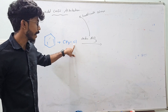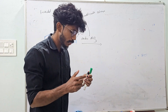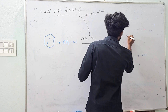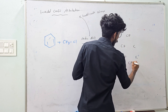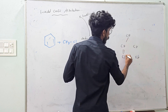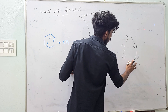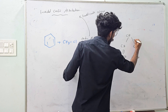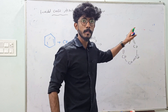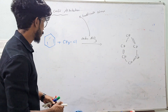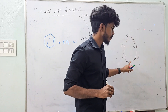Anhydrous aluminium trichloride — we call it AlCl3 — is the Friedel-Crafts catalyst. Then, benzene reacts with an alkyl halide in the presence of anhydrous aluminium trichloride. Benzene has 6 carbons: alternating single bond, double bond, single bond, double bond.